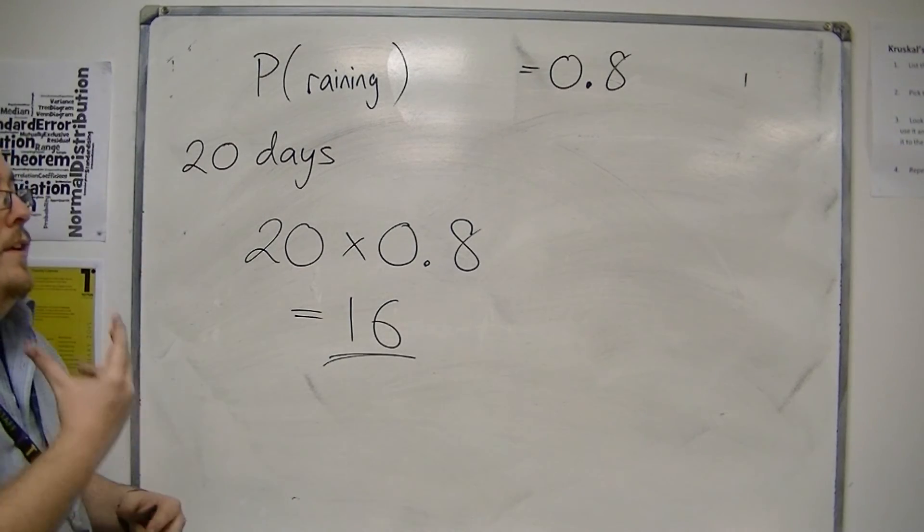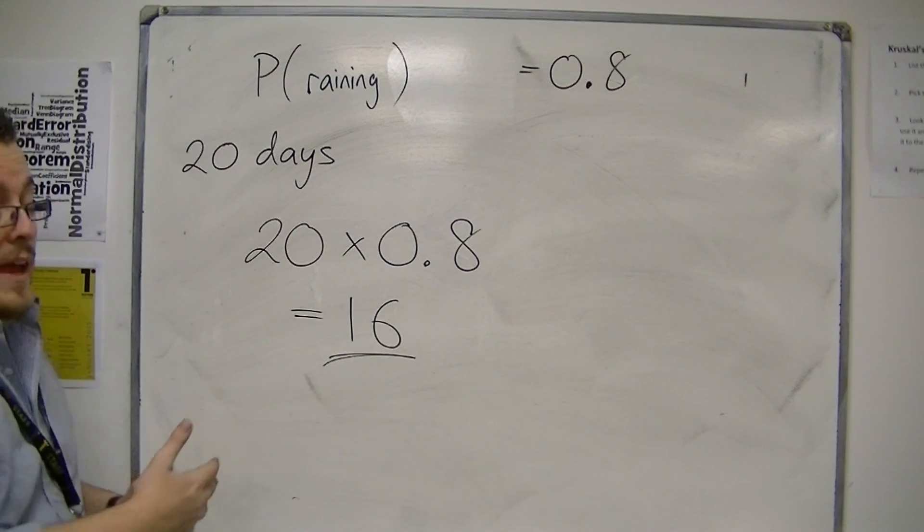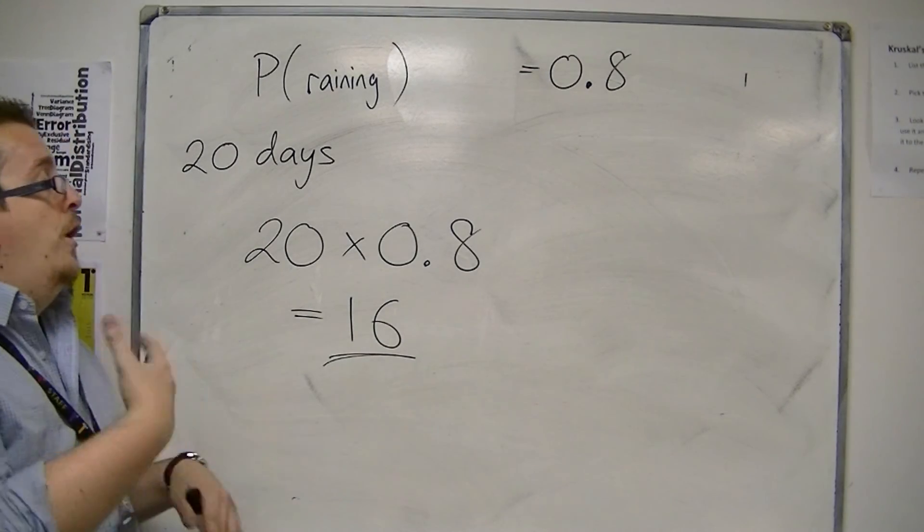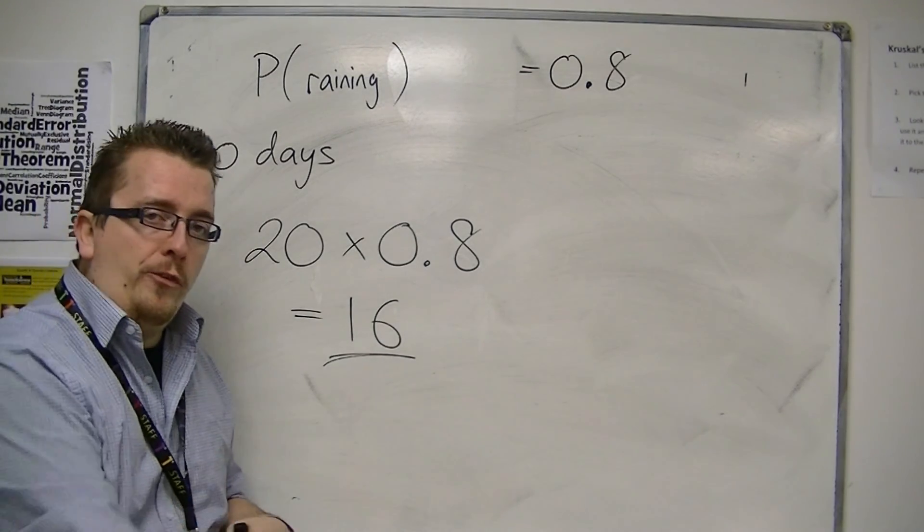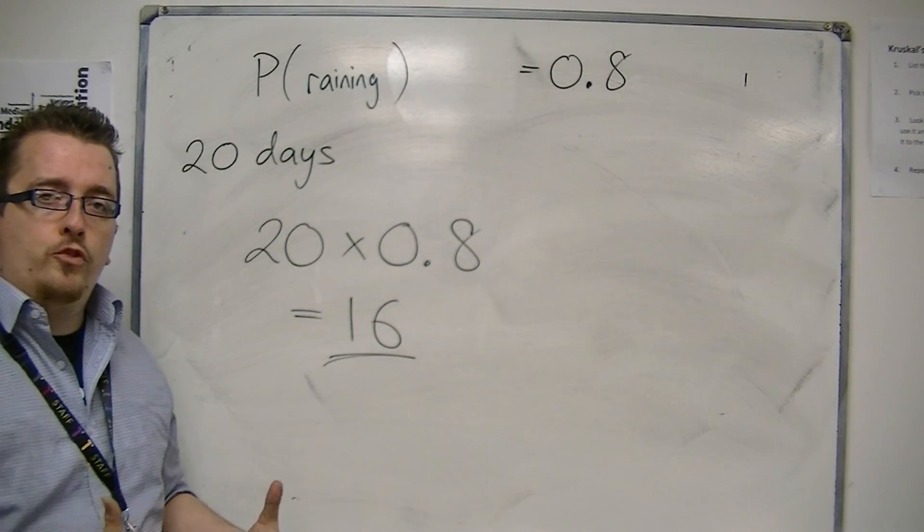It might be that you will see a graph similar to the sketch that I drew earlier. But in a lot of cases, it will be how many would you expect, given the probability and given the number of trials.